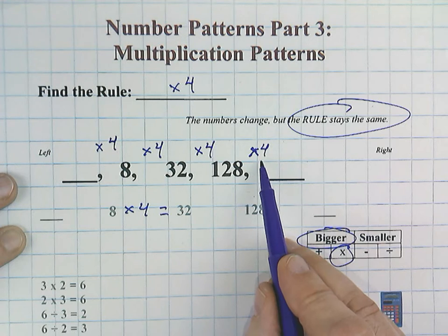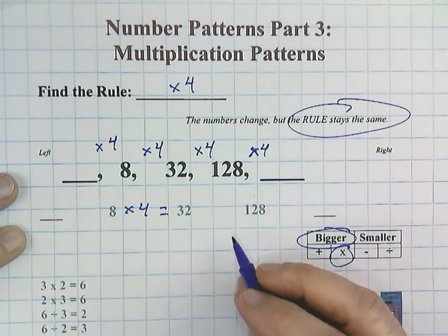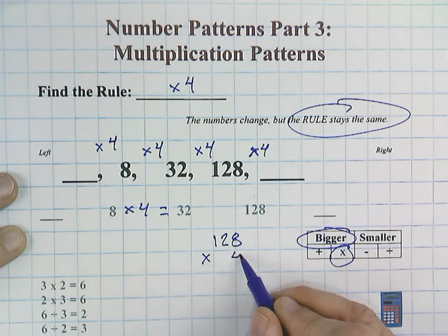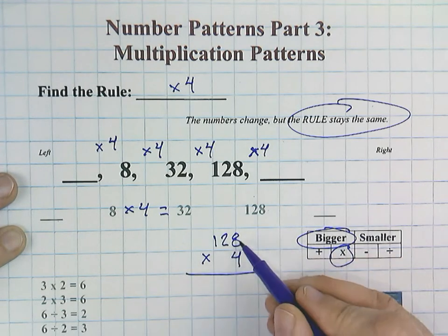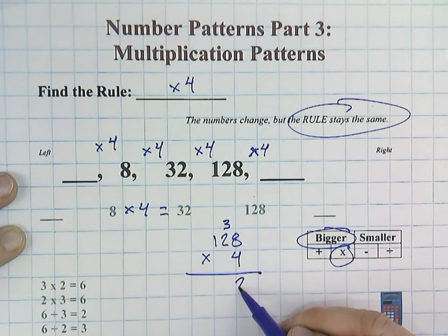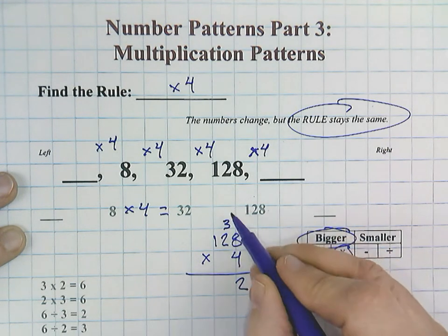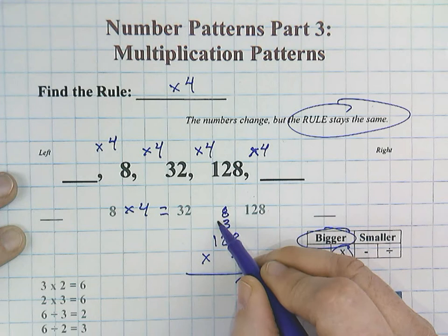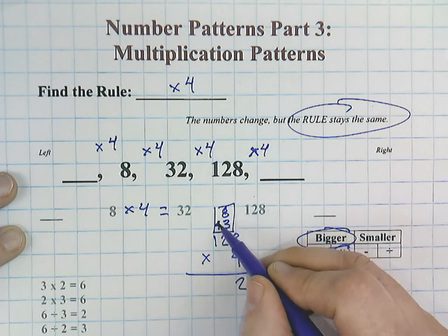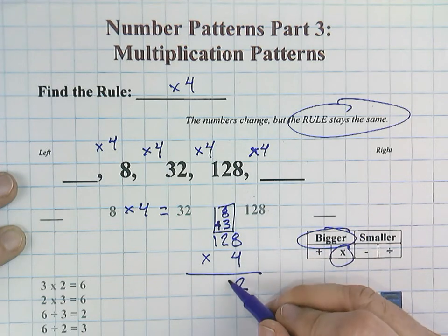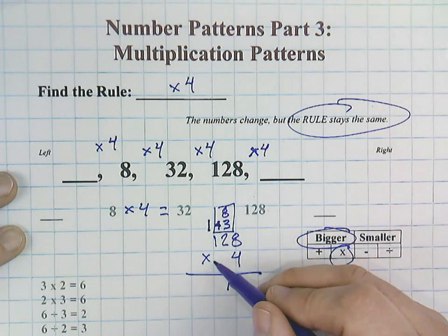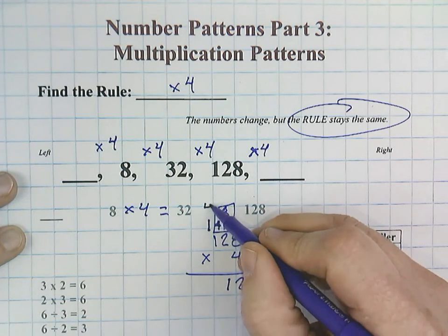Okay. So 128 times 4. 8 times 4 is 32. I'm going to regroup my 3. 4 times 2 is 8. But remember, we've got to add this. Fix that. 8 plus 3 is 11. Regroup that 1.